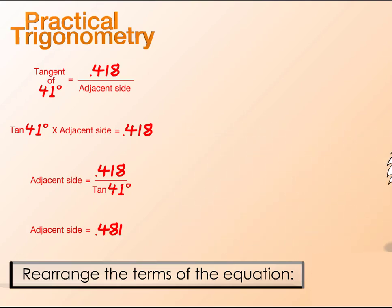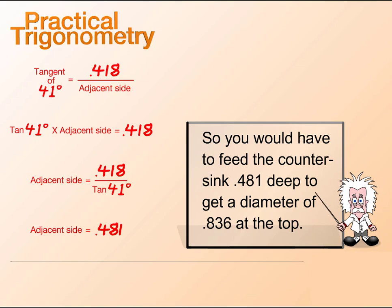So, you would have to feed the countersink 0.481 inches deep to get a diameter of 0.836 inches at the top.